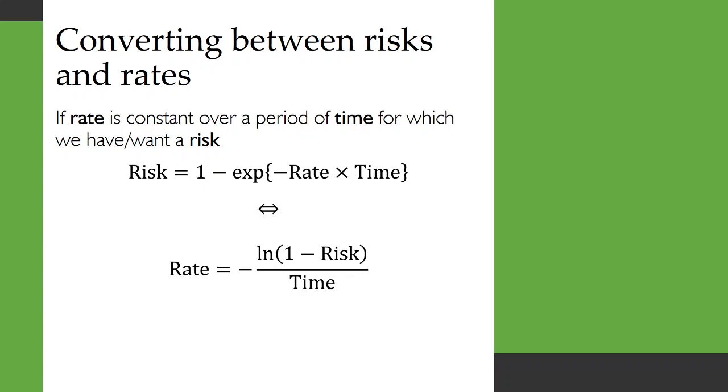We can convert between risks and rates. If a rate is constant over a period of time for which we have or want a risk, then we can use these formulae to convert between them. If we have a rate and we need a risk, we use this top one. So 1 minus e to the power of rate times time, negative thereof.